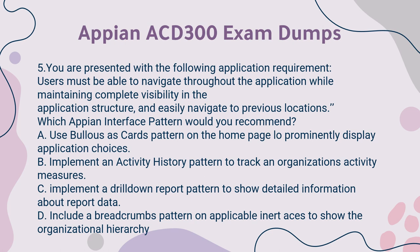Question 5: You are presented with the following application requirement: Users must be able to navigate throughout the application while maintaining complete visibility in the application structure and easily navigate to previous locations. Which Appian interface pattern would you recommend? A. Use bullets as cards pattern on the home page to prominently display application choices. B. Implement an activity history pattern to track an organization's activity measures. C. Implement a drill-down report pattern to show detailed information about report data. D. Include a breadcrumbs pattern on applicable interfaces to show the organizational hierarchy.